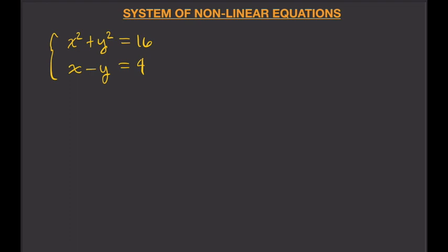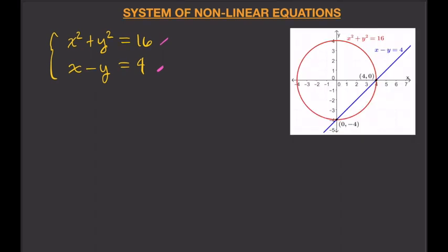Let's say our example is this. You can easily see that we're dealing with a circle and a straight line. I will show you the graph and the solution to this equation so that we will be guided when we actually solve it using substitution and elimination. We see that indeed we have a circle and a straight line, and we have two solutions. Our solutions are (4, 0) and (0, -4), obtained using the method of graphing.